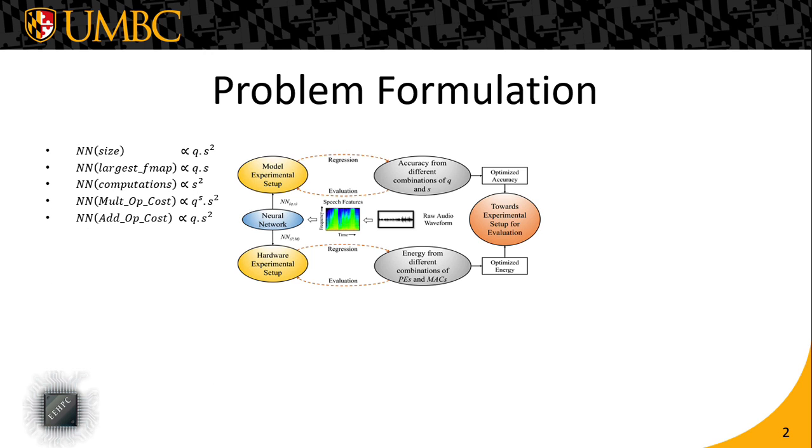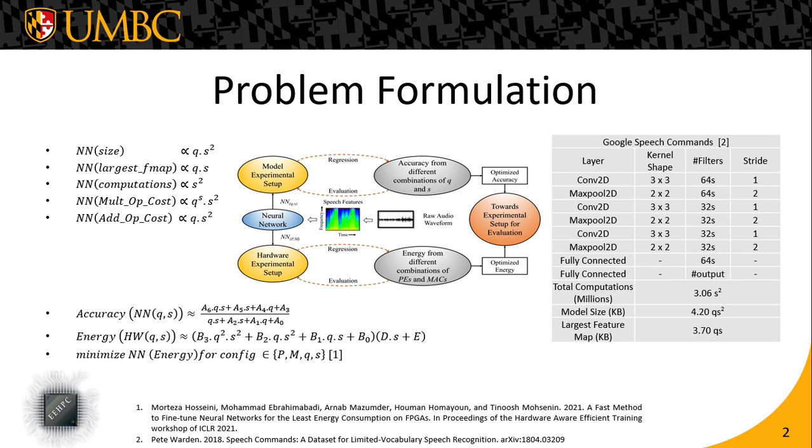We make a number of assumptions for the deployed CNN, and the regression polynomials that we used turn out to be something like this. The problem we are trying to solve is of this form, where we want to minimize the energy for a deployed CNN given that it is reaching some target accuracy for different configurations of quantization and scaling. The network we use is a cascade of three convolution max pooling pairs followed by a few fully connected layers. Our application task is keyword spotting using the Google speech commands dataset. We are not using audios in raw waveform, we are taking the MFCC features out of them.